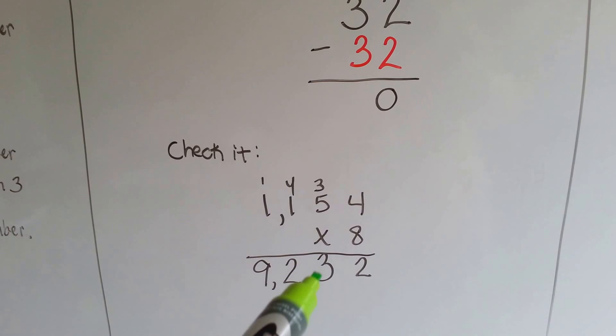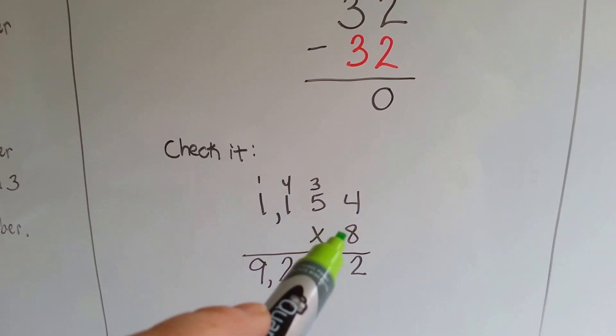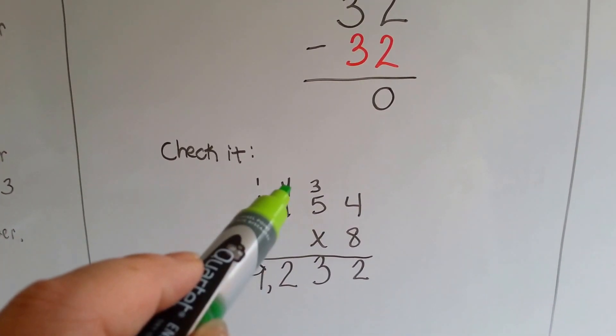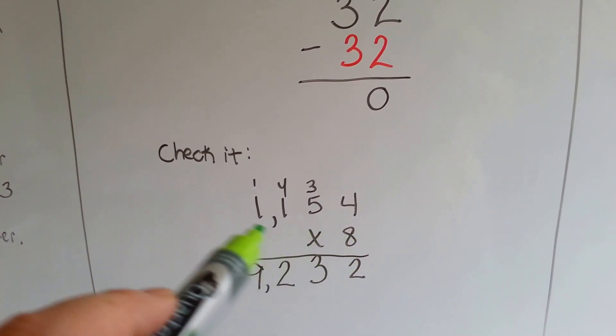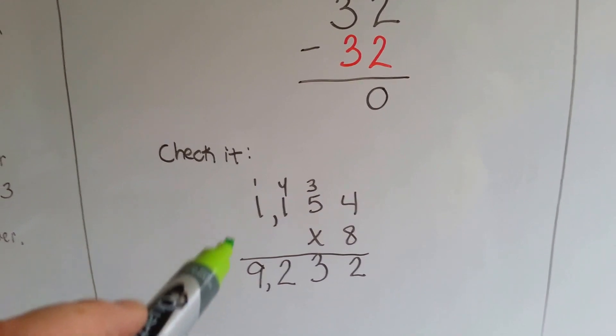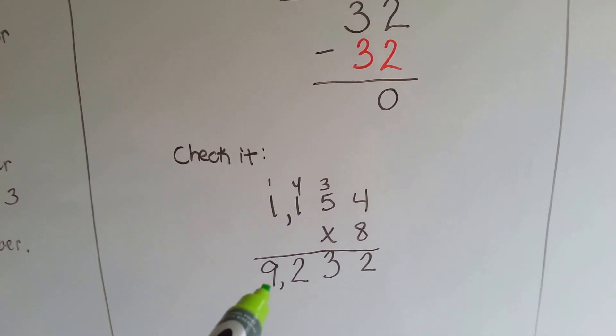8 times 1 is 8, plus 4 is 12. We carry over the 1 and put the 2 down. 8 times 1 is 8, plus the 1 is 9, and we get 9,232.